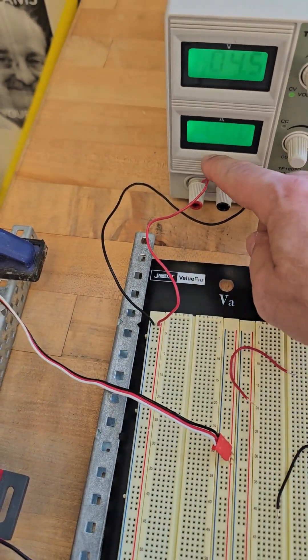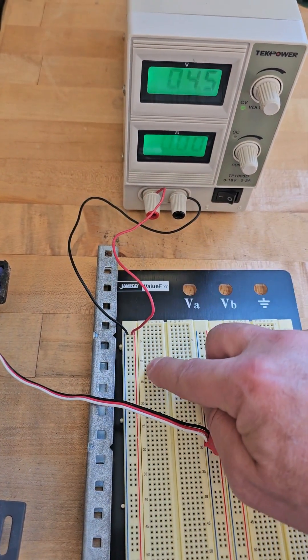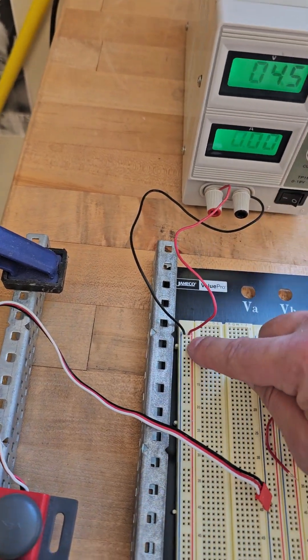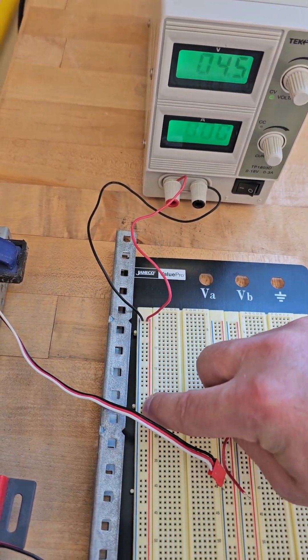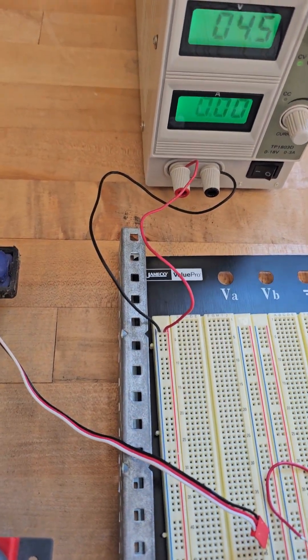So let's get this thing wired up. You'll notice I have the red hook to the positive and it's going to our power rail here in the red. The black wire is going into the negative terminal here, so all of this column will be negative.